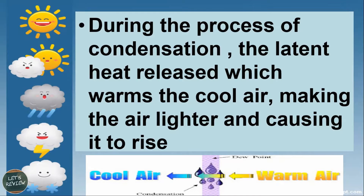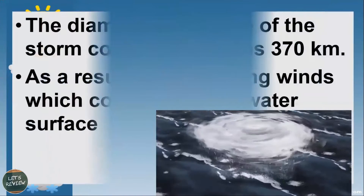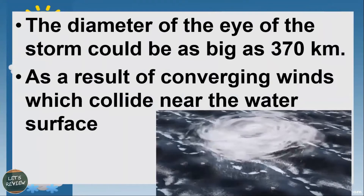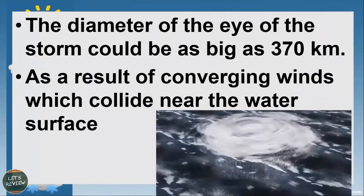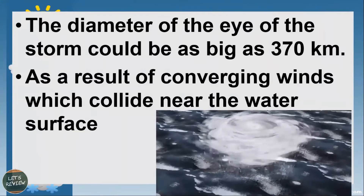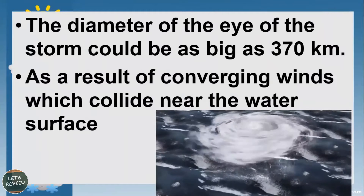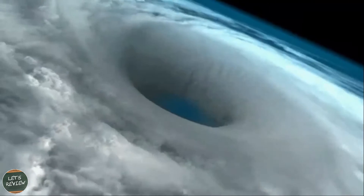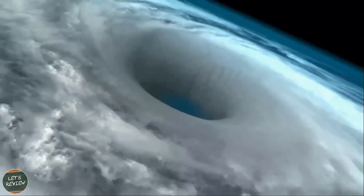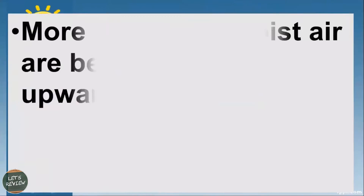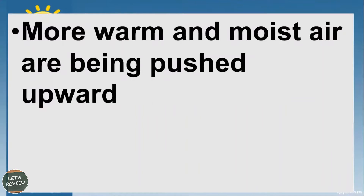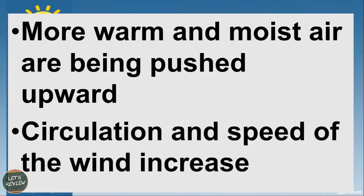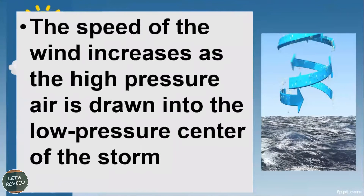This makes the air lighter, causing it to rise again and forming more clouds. The diameter of the eye of the storm can be as big as 370 kilometers, as a result of converging winds which collide near the water surface. The more warm and moist air is pushed upward, the more circulation and wind speed increase, as high-pressure air is drawn into the low-pressure center of the storm.